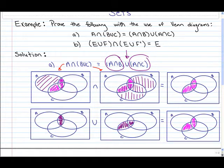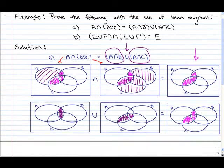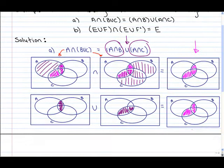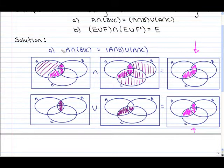You can see that this final Venn diagram is equal to exactly the left hand side Venn diagram. So left hand side equals right hand side, and we've just shown that with the use of Venn diagrams.